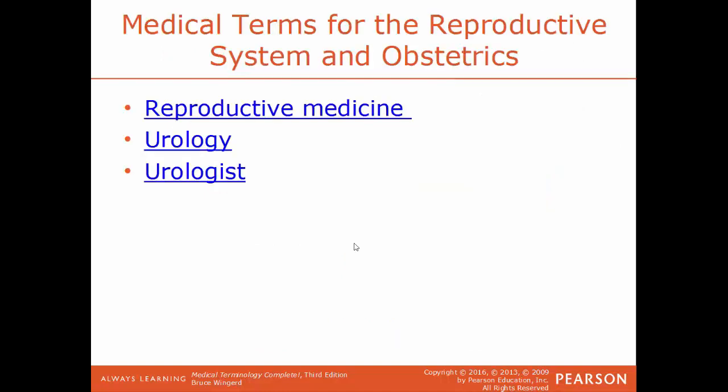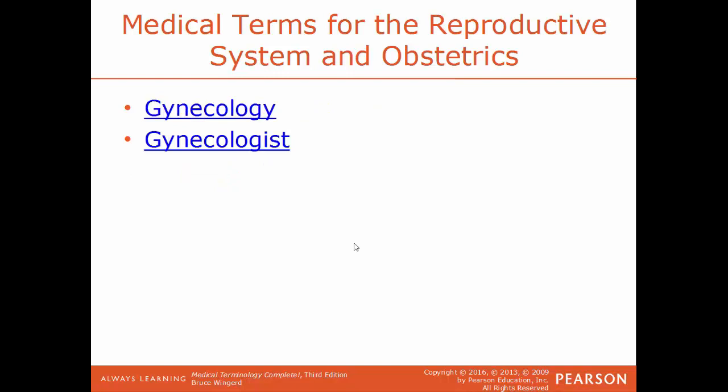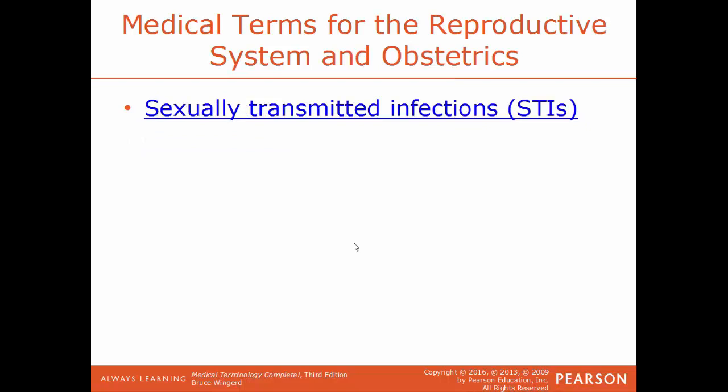There are some medical terms for the system and for obstetrics. Reproductive medicine is the field of medicine that deals with the diagnosis, management, and prevention of reproductive issues. Urology is the field of medicine that deals with the functions and disorders of the urinary system — a specialist would be a urologist. Gynecology deals specifically with the functions and diseases of the female reproductive system — a specialist would be a gynecologist. STIs, sexually transmitted infections, formerly known as STDs, are diseases passed from person to person through sexual contact.